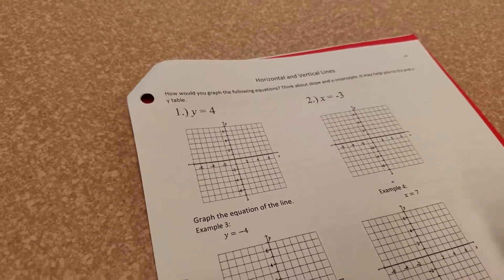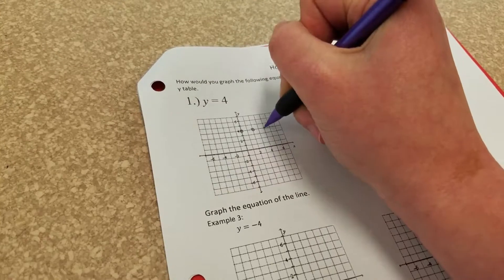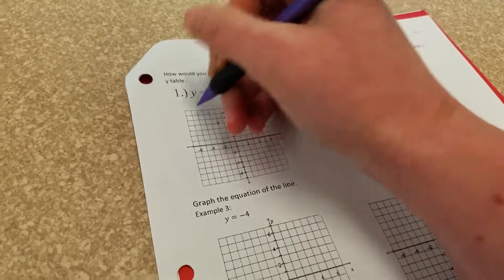In the first example, y equals 4. y isn't allowed to be anything else. It doesn't tell me what x can be, but everywhere I go, y has to be 4.